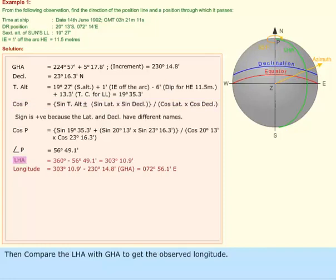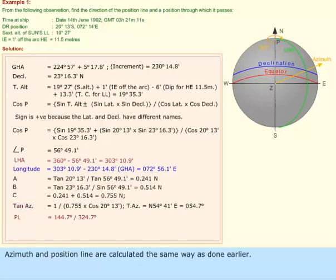Then, compare the LHA with GHA to get the observed longitude. Azimuth and position line are calculated the same way as done earlier.